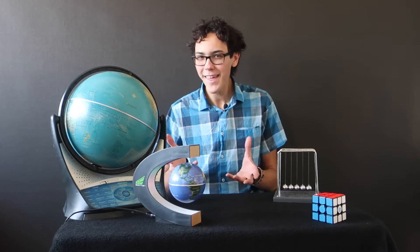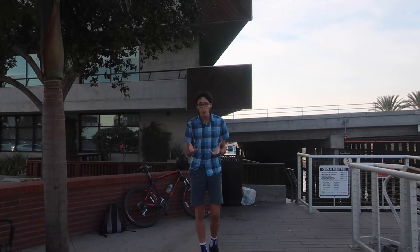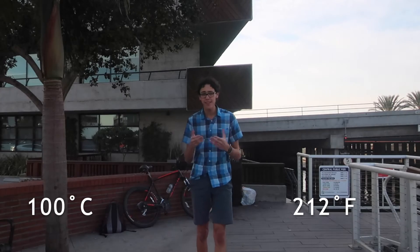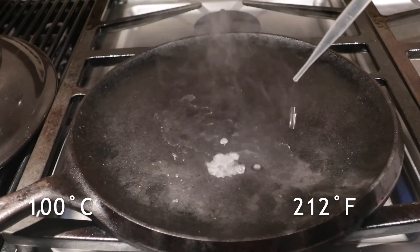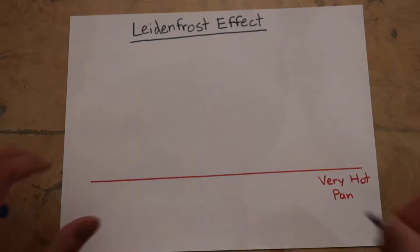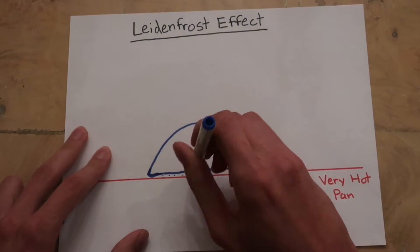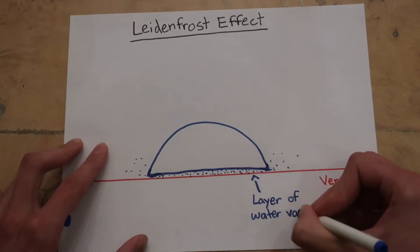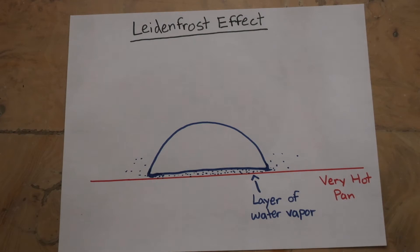So why is this? Water boils at 100 degrees Celsius at sea level. So if the pan is above 100 degrees, then the water will instantly boil away. If it's a little bit below 100 degrees, then the water will just quickly evaporate. But if the pan is far above the boiling point of water — say 250 degrees Celsius — then as soon as the water droplet hits the pan, it will create a layer of steam for that water droplet to float on, and the water can hover on the surface of the pan.